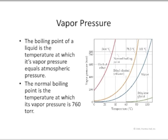Okay, and vapor pressure, and this diagram here talks about boiling point and what boiling point is. And why boiling point is what it is. And it says the boiling point of a liquid is the temperature at which its vapor pressure equals atmospheric pressure. The normal boiling point is the temperature at which vapor pressure is 760 torr.